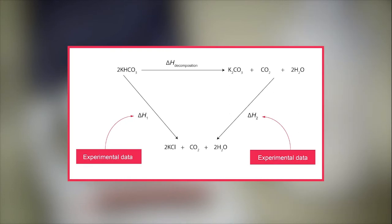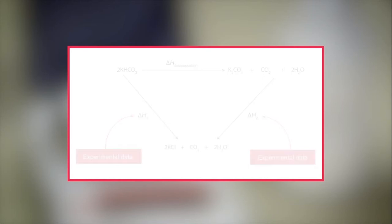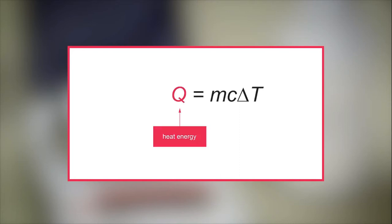The experimental data can be used to calculate delta H1 and delta H2. Once these values have been calculated, the enthalpy for the decomposition of potassium hydrogen carbonate can be determined. The first step is to calculate the amount of energy released or absorbed in each reaction according to the amount of substance. This is calculated using the equation Q equals M C delta T. Q is the heat energy lost or gained in the experiment.